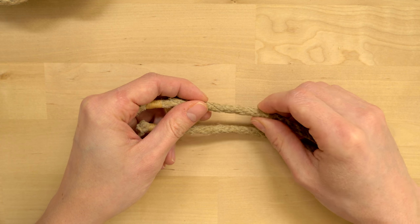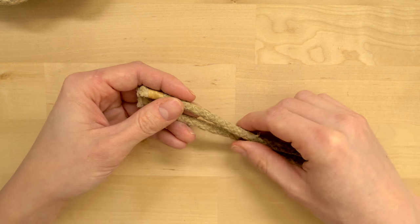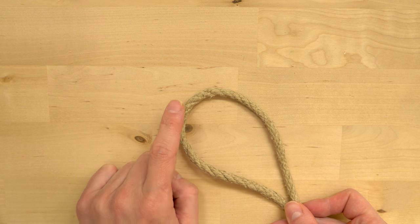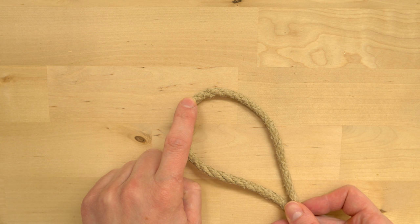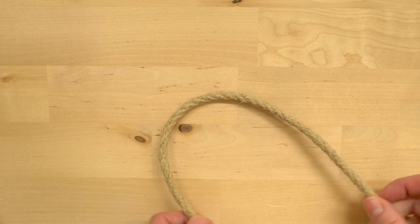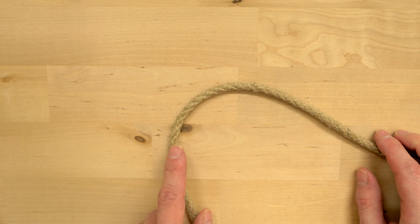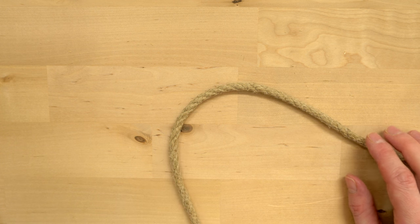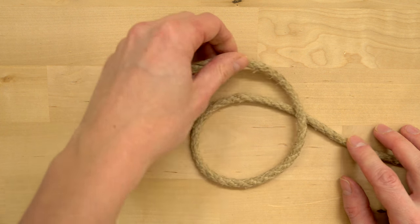Once you've done that, we can begin tying our mat. I have my rope here and we're going to start at about the middle point in the rope, so basically fold it in half. We're only going to work with one end, which is going to be this left one. What we're going to do first is make a loop like this.